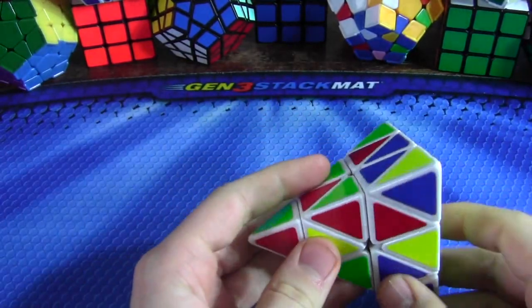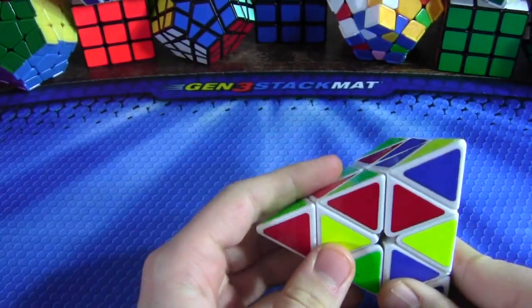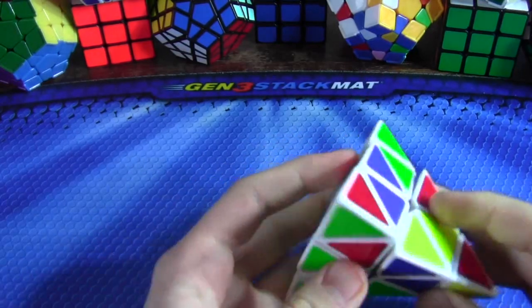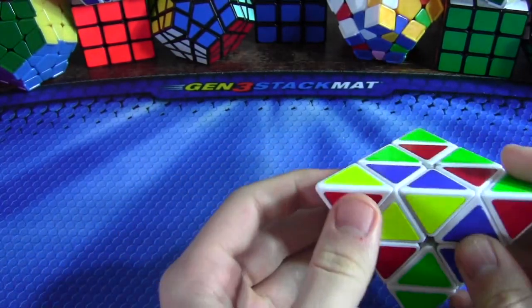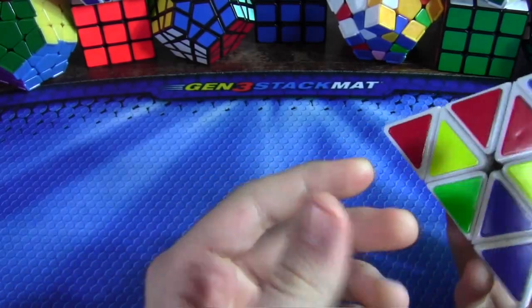This last scramble was the slowest one. It was a 3.23. Again, I'm not exactly sure what I did, but I'm going to do blue for this time. I'm pretty sure I did blue.